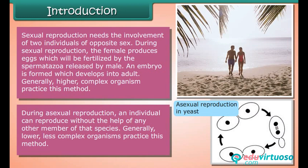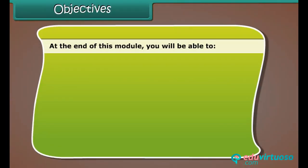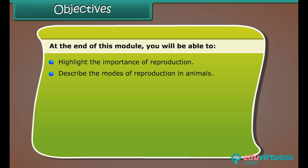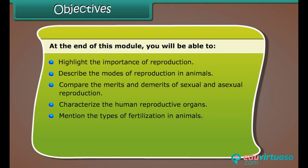Generally, lower and less complex organisms practice asexual reproduction. At the end of this lesson, you'll be able to highlight the importance of reproduction, describe the modes of reproduction in animals, compare the merits and demerits of sexual and asexual reproduction, characterize the human reproductive organs, and mention the types of fertilization in animals.